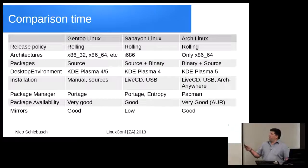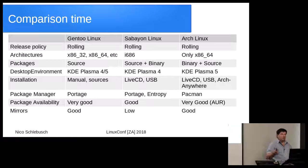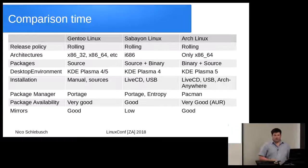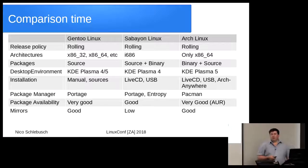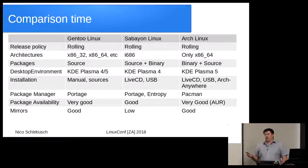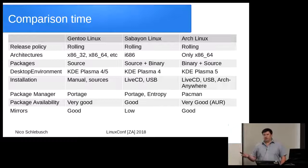An important thing is release policies — how often do we get updates. Ubuntu, for example, gives you updates every six months. Gentoo, Sabayon, and Arch Linux all use what we call a rolling update policy, meaning you install the system once and get updates basically every day, depending on how quickly the package maintainers release new versions of the software.